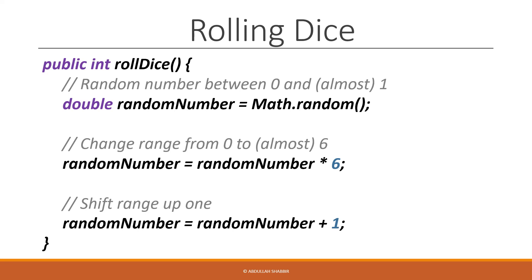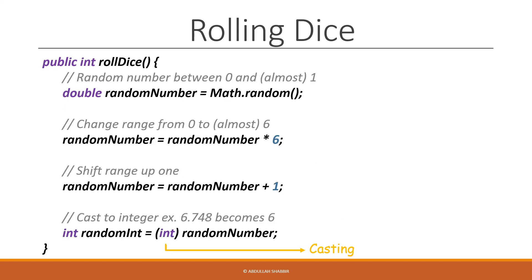The next thing we need to do is our casting step to get the random integer we want without any decimal place. And we can cast this number by putting the variable type we want, which is an integer, in parenthesis right before the value we want to change, which is random number. And we can store the new int value into our variable randomInt.